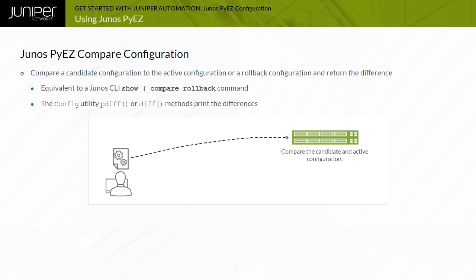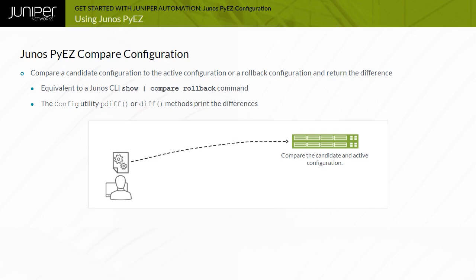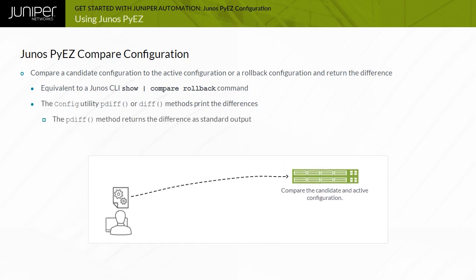The pdiff method returns the difference as standard command output. The diff method returns the output as an object.